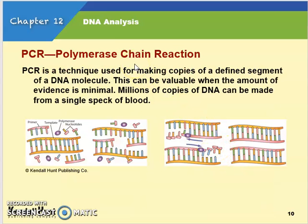The next step is PCR — polymerase chain reaction. This is a technique used to make a copy of a defined segment of a DNA molecule. If there's a very small amount of DNA found at a crime scene, they can run PCR on it and make millions of copies from even one single cell, which is very important when running tests.